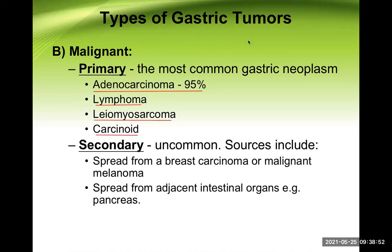Lymphoma is the malignancy developed from lymphoid tissue. Leiomyosarcoma is the malignant counterpart of leiomyoma — leiomyoma being a benign tumor from smooth muscle, so if a malignant tumor comes from smooth muscle, we call it leiomyosarcoma. Carcinoid is a serotonin-releasing malignancy or tumor.